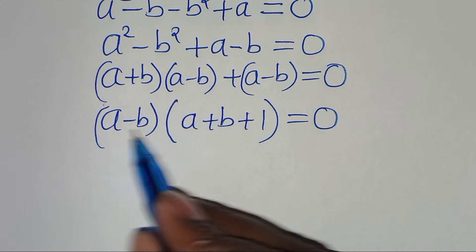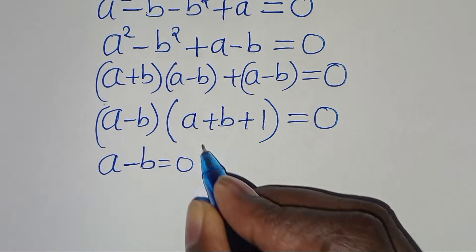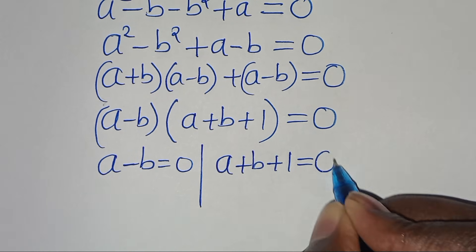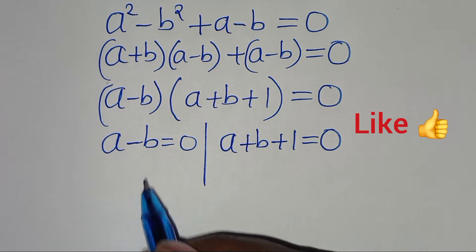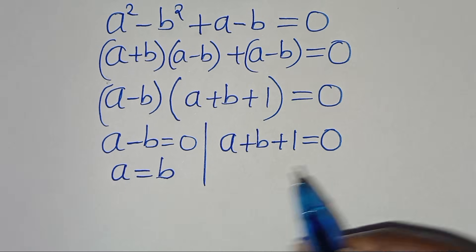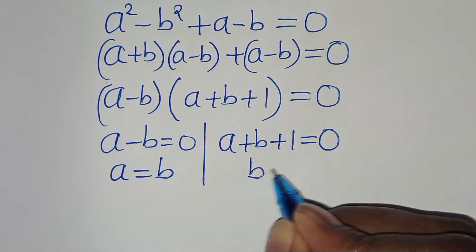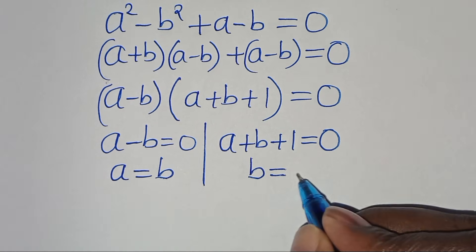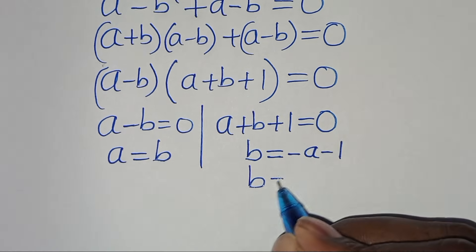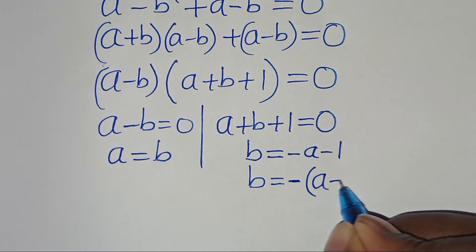This gives us two parts: the first part is a minus b equals 0, and the second part is a plus b plus 1 equals 0. From the second part, making b the subject, we get b equals minus a minus 1, which we can write as b equals negative of the quantity a plus 1.